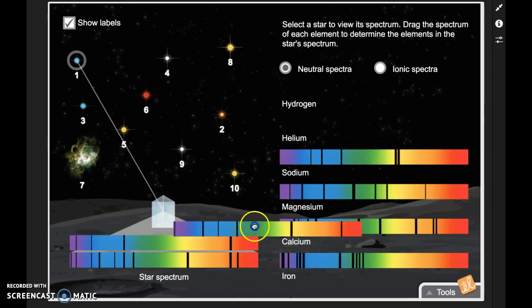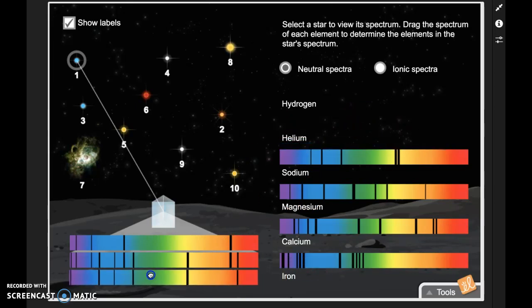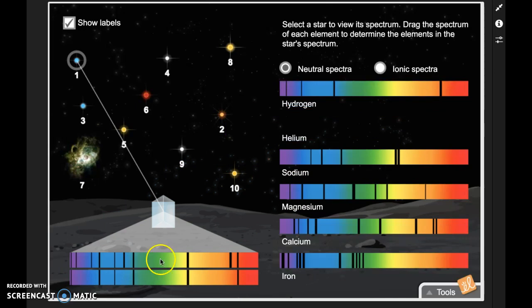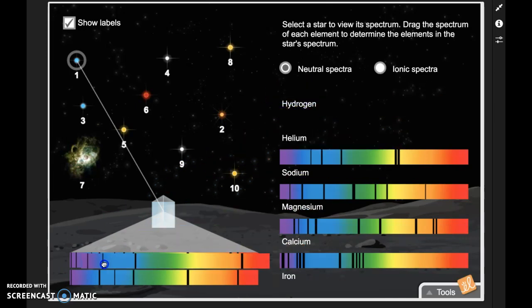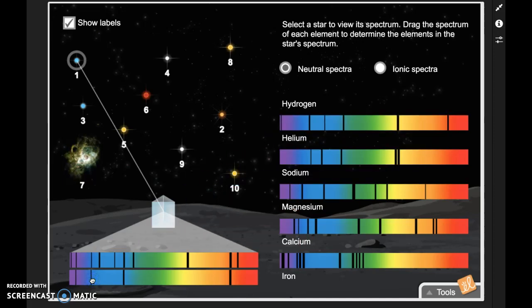All right, and I can drag all of these over here. I can see now I'm looking at helium. I didn't quite get that to stick there. I'm looking at helium. There we go. All right. And again, I see that I've got the dark lines on the top and the dark lines on the bottom, and they are lining up. So it's telling me that this first star is burning hydrogen and helium.